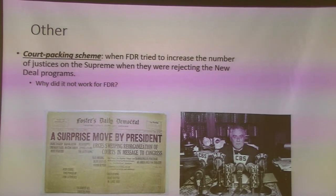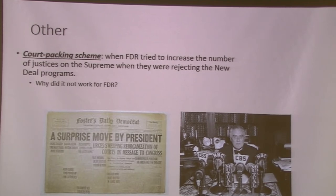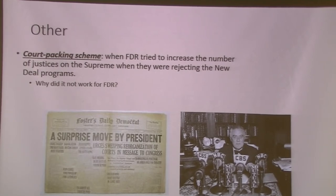For history, one thing you need to know is the court-packing scheme tried in the 1930s by FDR. He did not like the Supreme Court ruling many of his New Deal programs unconstitutional. So he tried to increase the number of justices from 9 to 15. Remember, the Constitution does not say how many justices there have to be — we've had 9 since 1868, but it doesn't have to be that way. There's actually talk of this happening again with Democrats. Congress would not go along with him.